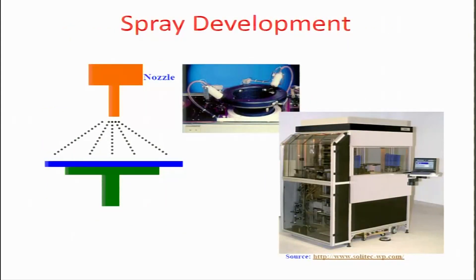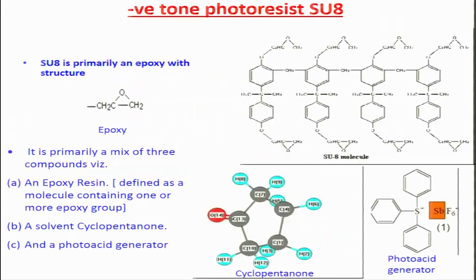In high production systems, spin coaters and nozzles are eliminated and replaced by a spraying system which sprays resist at high pressure to ensure uniformity in thickness. Large machines called steppers are used for high throughput lithography. These are projection lithography based systems and processes carried out in industry for very high yield.